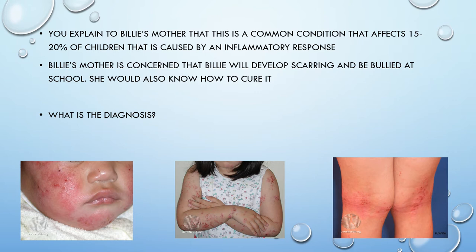If you said atopic dermatitis or eczema, good job. Some of the features that pointed us towards this diagnosis are the age of the child and the distribution of the rash. In a toddler-aged person, eczema is usually on the extensor surfaces. In babies, it's generally on the face and the neck. In older, school-aged children, usually on the flexor surfaces. Other features not included in this vignette that might point towards eczema would be a family history of atopy or a personal history of atopy, and of course the itching is a big giveaway.